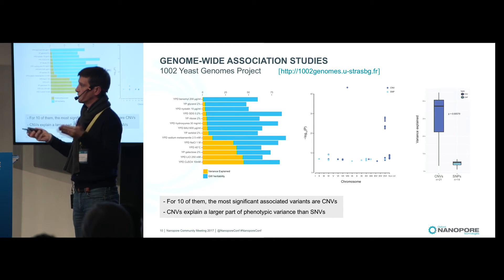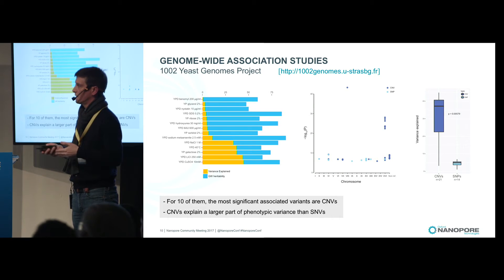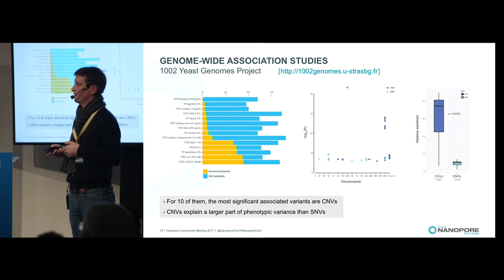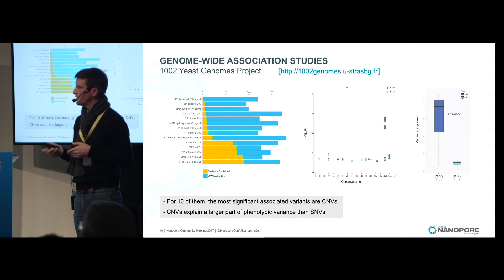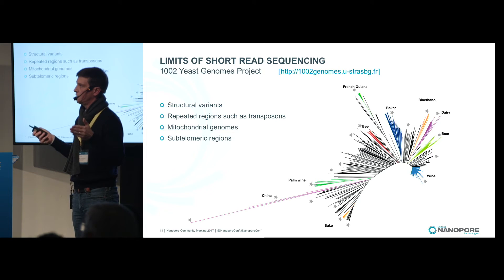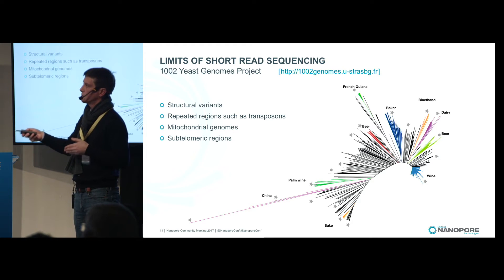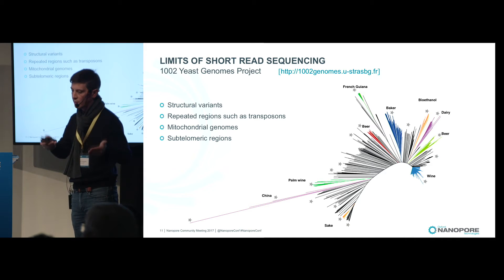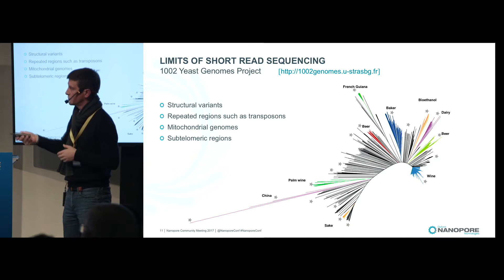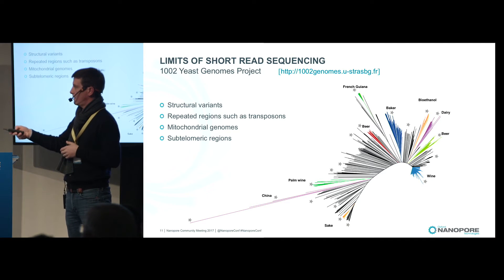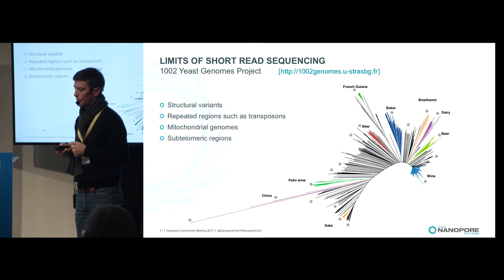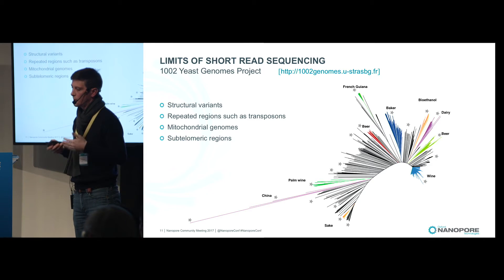To summarize: for 10 conditions, the most significant associated variants are CNVs, and CNVs explain a larger part of phenotypic variance. But using short reads, we don't have access to structural variants — not just CNVs, but also translocations, inversions, and insertions like transposons. We know that these kinds of variants will have an impact on the phenotypic landscape and diversity.